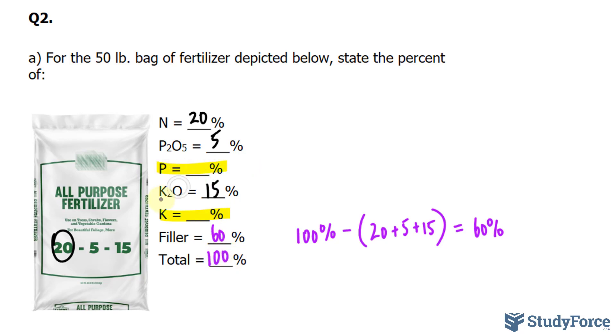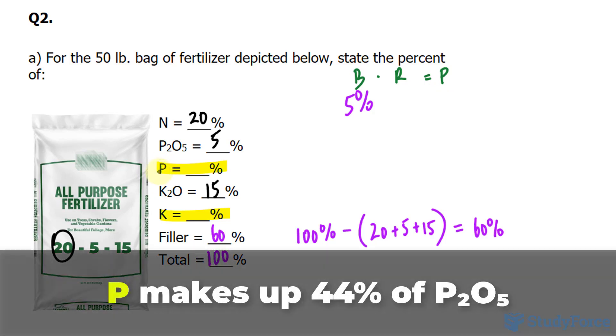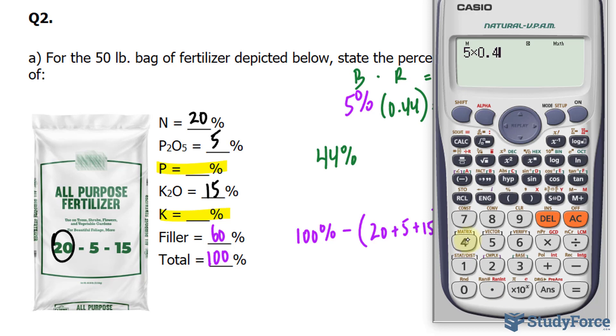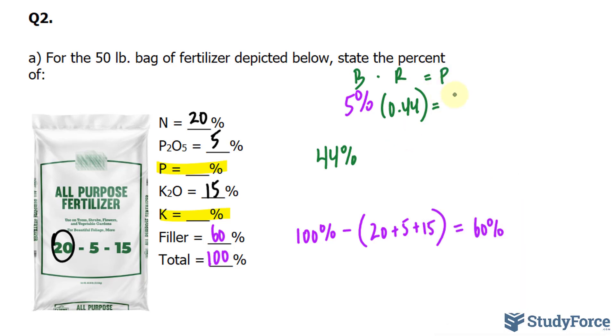Now let's worry about elemental phosphorus and potassium. We'll begin with phosphorus. So to find out the percentage of phosphorus, we take the percentage of P2O5, and using that same formula as before, B times R is equal to P, we can find the portion of this 5% that's only P. Now remember that the amount of P in one molecule of P2O5 is always 44%. So we'll multiply this by 0.44, and we'll find out the percentage of elemental phosphorus. 5 times 0.44 makes 2.2% of the entire bag is phosphorus.